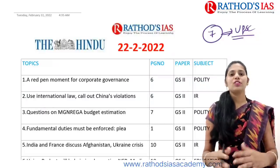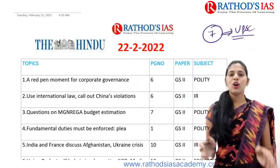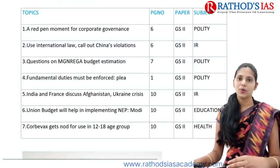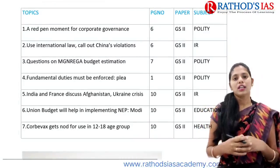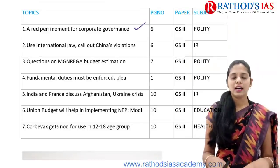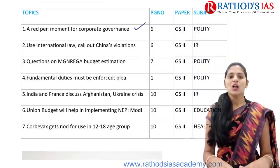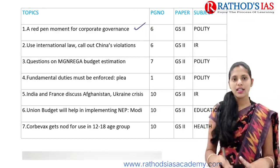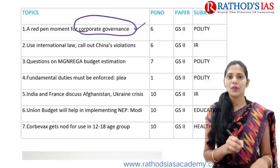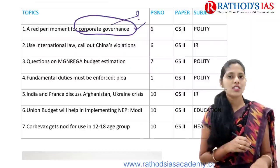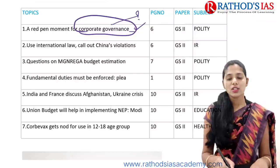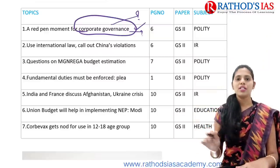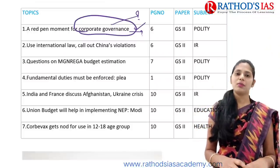Now we are going to have our discussion so that you will be getting some clarity. I will also be explaining how we can link each topic with our GS subjects as well. So the first topic is about corporate governance. From the last 10 days, there is one important news regarding data. This topic we can connect with right to privacy, and it will come under our polity. You need to know the definition of corporate governance, its weaknesses, and the way forward.